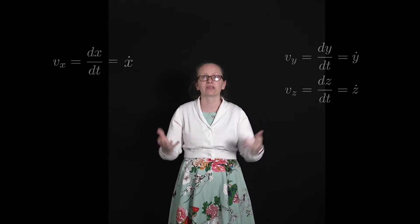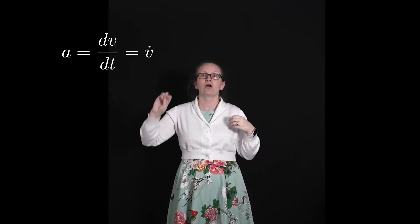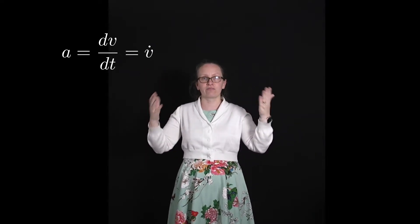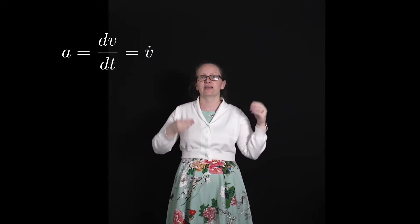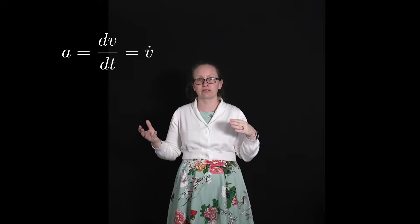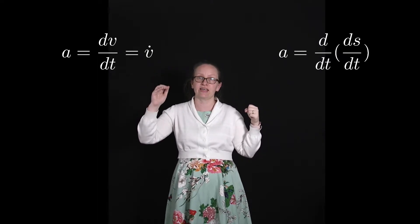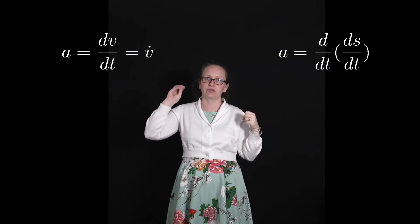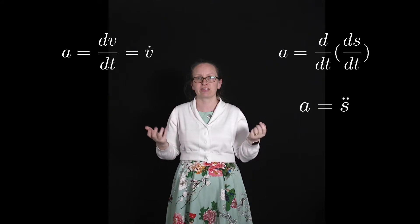The acceleration is the change of velocity with time. So we can write that acceleration is equal to dv/dt, which is equal to v-dot. And as velocity is equal to the derivative of displacement, the acceleration is the second derivative of the displacement. So we can write that acceleration equals d/dt of ds/dt, or we can write it as s with two dots over the top to show we're taking the second derivative with respect to time.